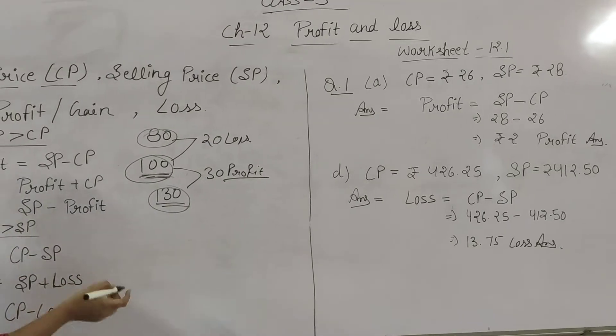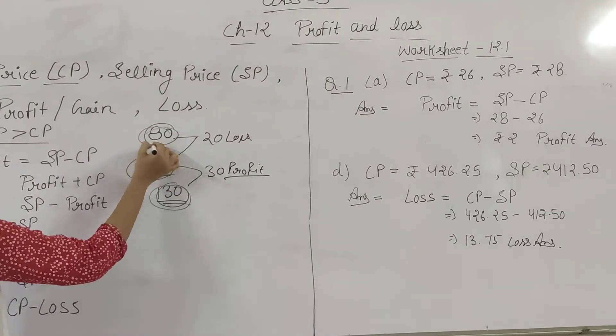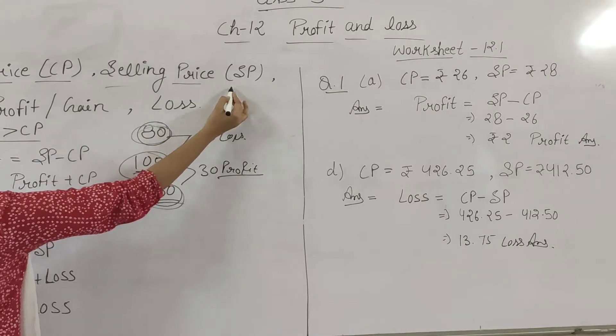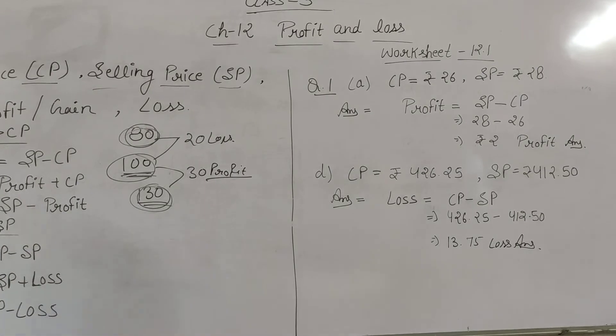However, if you sell at 130 or 180 rupees, that is called the Selling Price, abbreviated as SP.